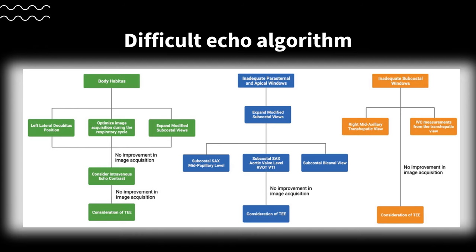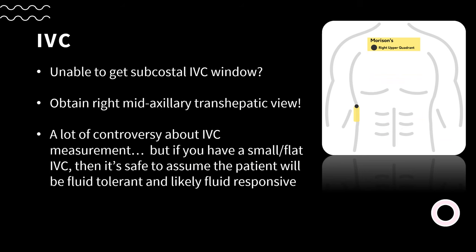If you've tried all the above tricks and still do not have adequate images, move on to the third column: inadequate subcostal windows. You'll be able to look at the IVC through the right mid-axillary transhepatic view. If you're unable to get a subcostal IVC view, move the transducer to the right upper quadrant — this spot is very similar to the initial view obtained for the FAST exam. It's safe to assume that if you have a small or flat IVC, the patient is fluid-tolerant and likely fluid-responsive.